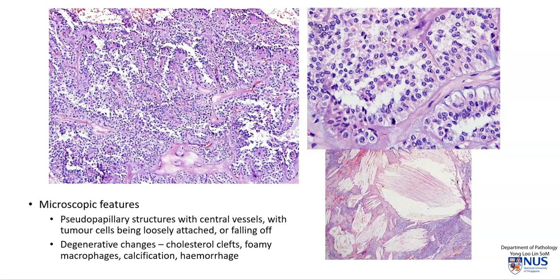Looking at this higher magnification picture, we can see that the tumor cells are actually quite uniform. They don't have the usual features of malignant tumors with nuclear pleomorphism, lots of mitotic figures, etc.